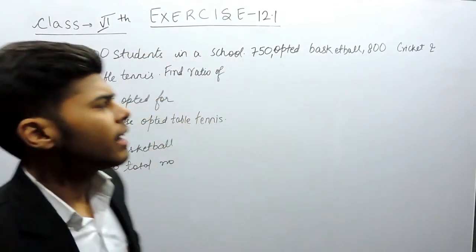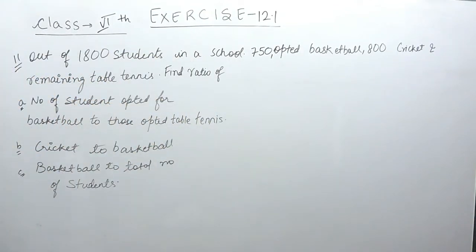Hello everyone, this is the 11th question of exercise 12.1. The question says that out of total 1800 students in a school, 750 opted to play basketball, 800 opted to play cricket, and the remaining played table tennis. We have to find the number of students who opted for basketball to those who opted for table tennis.